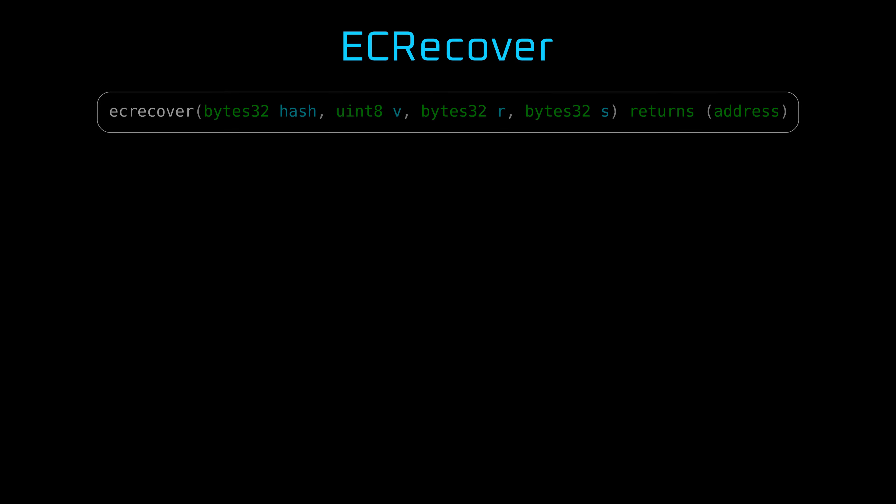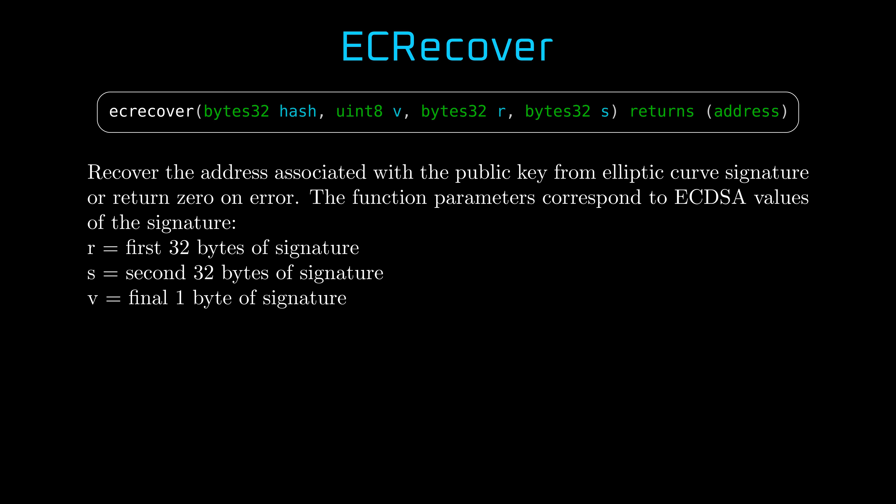So what will the next episode be about? We will talk about digital signatures. And here's a puzzle we'll solve: the EasyRecover function has three arguments — S, R, and V.